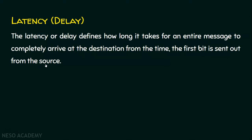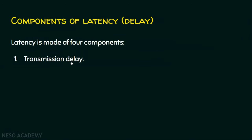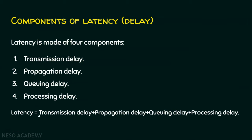Let's see what are the components of latency. Basically, latency is made up of four components: number one, transmission delay or transmission time; number two, propagation delay or propagation time; number three, queuing delay or queuing time; and number four, processing delay. The summation of all these delays is the latency. So latency equals transmission delay plus propagation delay plus queuing delay plus processing delay.